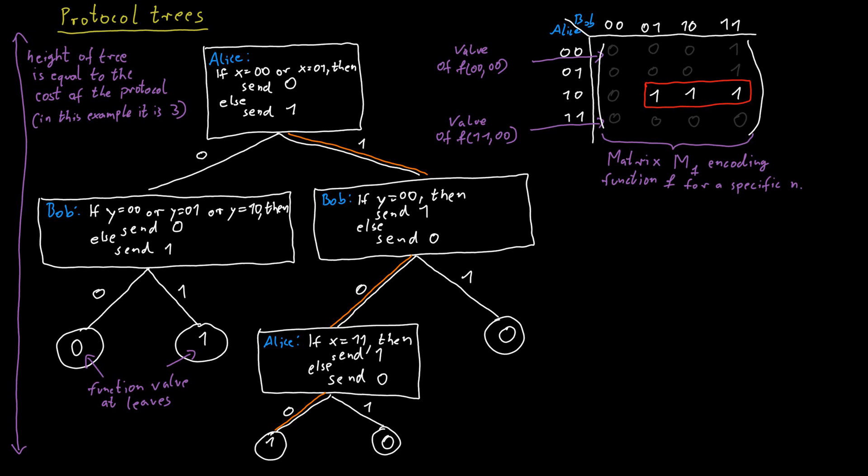This is really the crucial idea behind more efficient communication protocols: we do not completely need to determine what x and y are — we just need to determine what the correct solution is. In some cases we don't need to know exactly what y or x is to figure out whether the correct answer is 0 or 1.